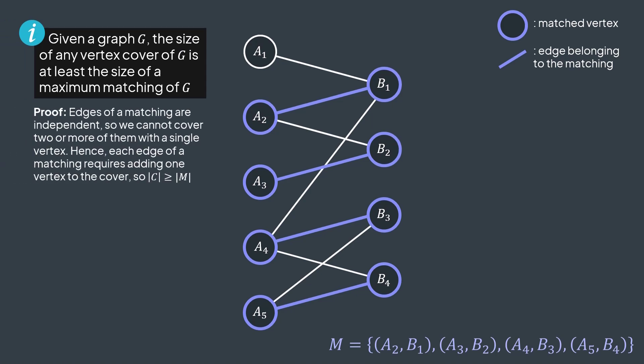To build a vertex cover we need to cover all the edges by adding vertices. And edges of a matching are independent, so no two edges can have a same incident vertex. In consequence, we cannot have a vertex that covers more than one edge of the matching. Each edge of the matching requires one more vertex to be covered. Like here we have four edges in the matching, we need to add a vertex to our cover for each one of them, and we may need more vertices if required. We deduce that the size of a vertex cover is at least the size of a maximum matching.